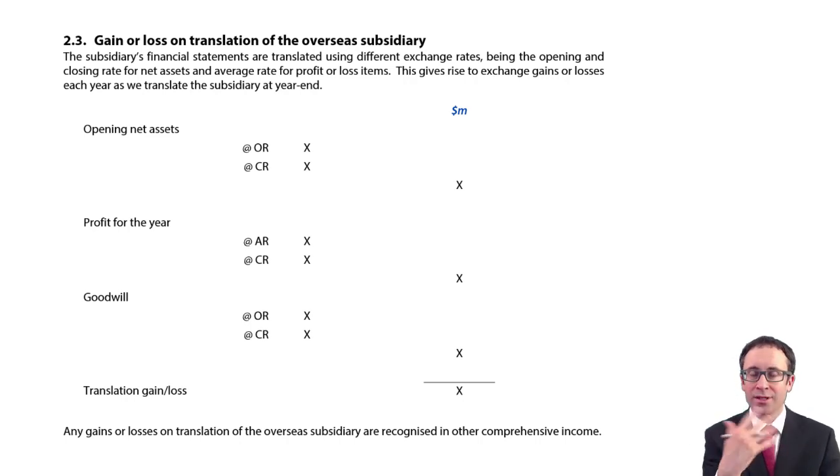I think there's an easier way to work out that overall gain or loss on translation is to just separate it out into the constituent parts. The fact that they were making a gain or loss on the opening net assets. So that would have been at the opening rate and is now at the closing rate. So you can work out the gain or loss being the movement as we go from what it was to what it now is.